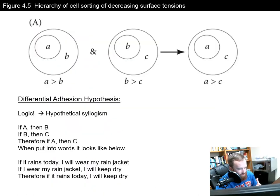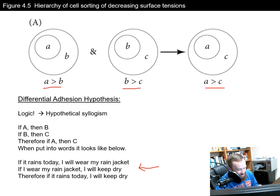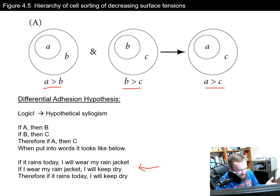We can model this with the differential adhesion hypothesis. Imagine A, B, and C are the epidermis, mesoderm, and endoderm. If A is always within B, and B is always within C, then A is always within C — a self-organizing property. It's like logic: if it rains I'll wear my rain jacket, if I wear my rain jacket I'll stay dry, therefore if it rains I'll stay dry. The same principle applies to tissue types, breaking down the relationships between them.